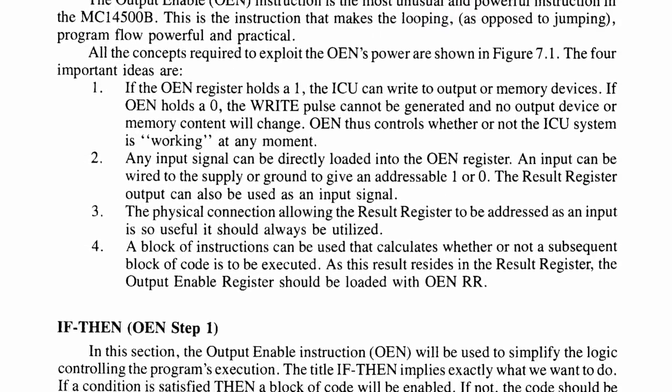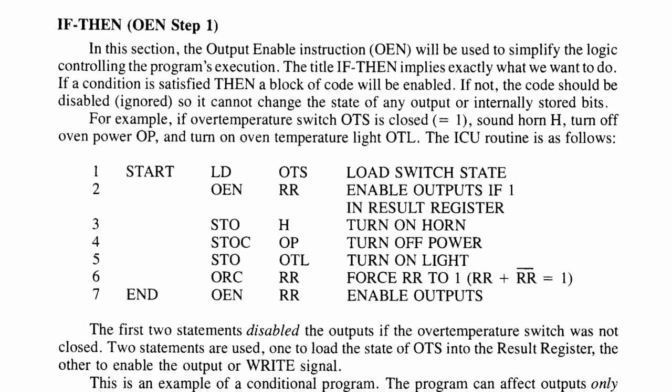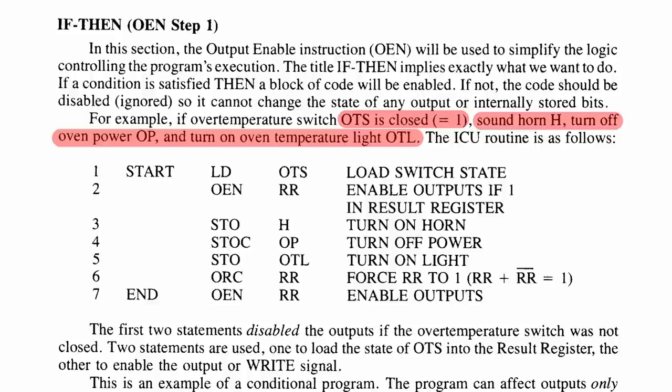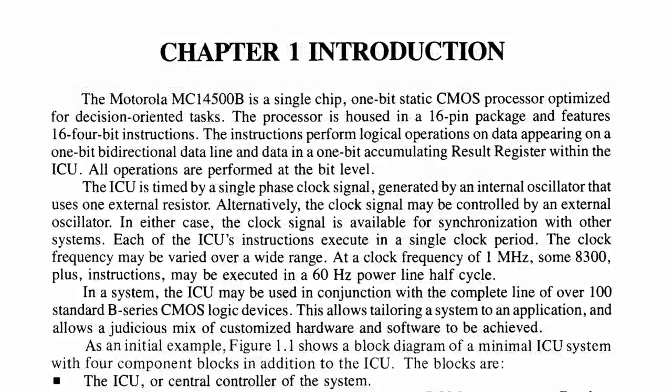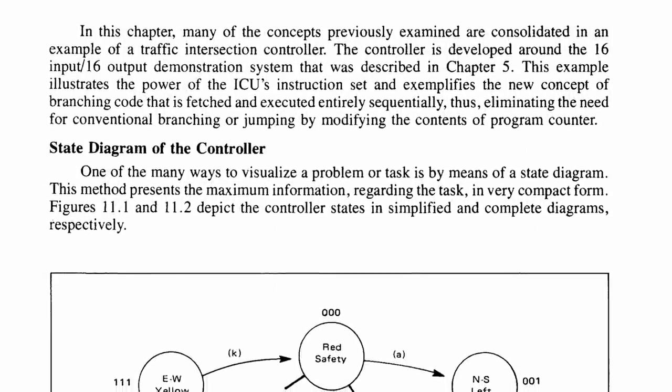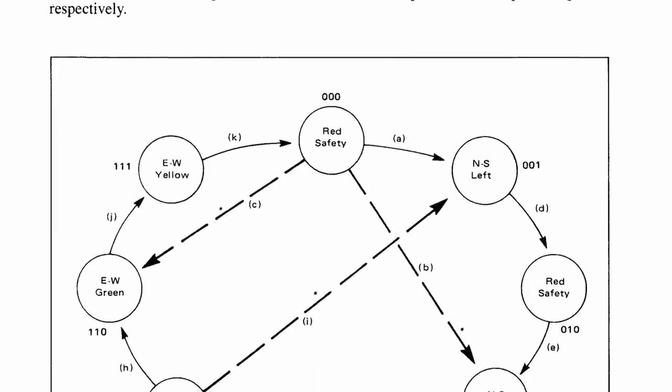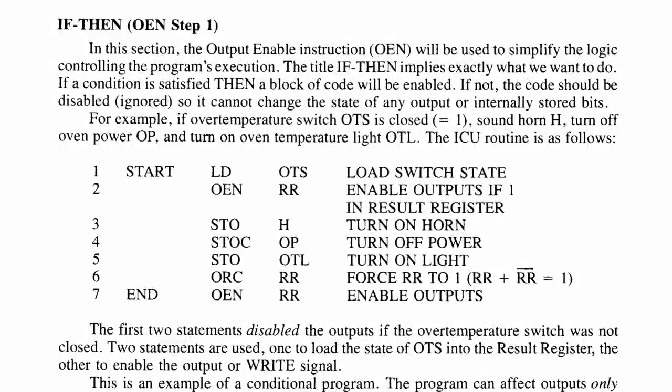Going back to chapter 7, they give an example of using the MC14500 to sound a horn, turn off power, and turn on an oven temperature light when the over temperature switch is closed. Before we take a look at the actual code, this is an amazing example because it really drives home the point of this one bit industrial control unit. It was not meant for generic computing purposes. It was meant to replace logic in industrial environments, meaning it works really well in finite state machines.